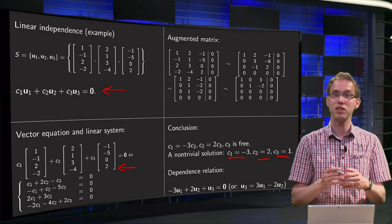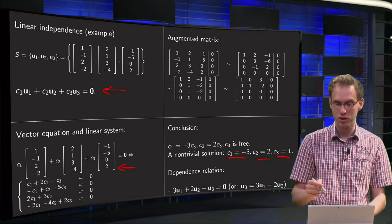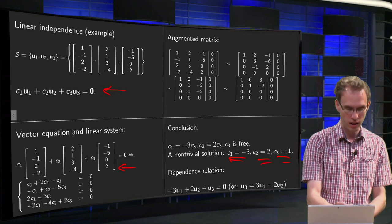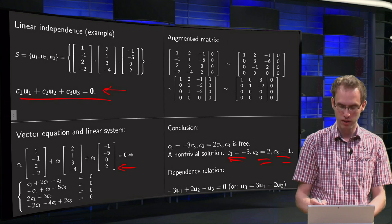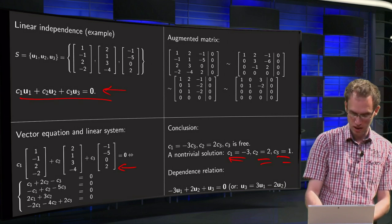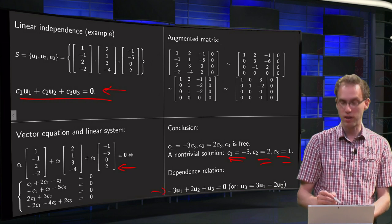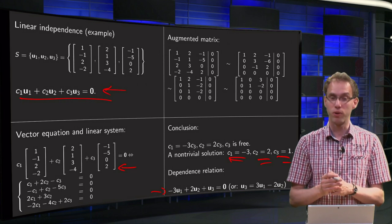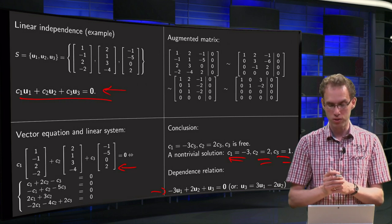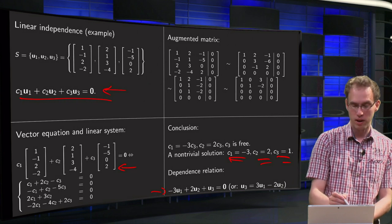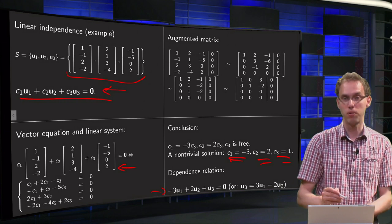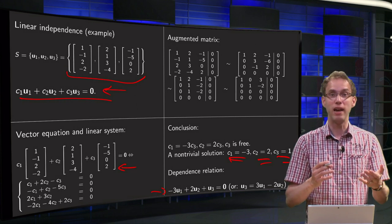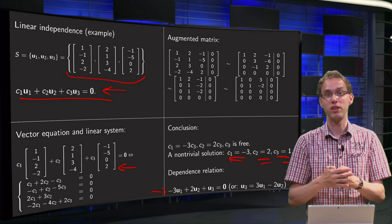And an example of a dependence relation, which explains how they depend on each other, you can find that by plugging this c1, c2, and c3 into your original equation over here. So we find the dependence relation is for example this one over there, or if you like you can put u3 on one side and the other ones on the other side, so u3 equals 3 times u1 minus 2 times u2, and you can also check that plugging in the numbers again. Those are examples of dependence relations; they explain how the vectors depend on each other.